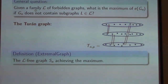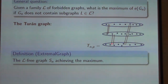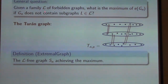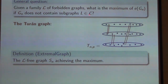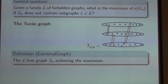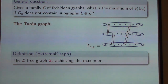A short introduction to notation: the Turán graph on N vertices with P classes means that N vertices are distributed into P classes as evenly as possible, and two points are joined if and only if they belong to different classes. The general question in Turán-type extremal problems is: given a family of forbidden graphs, how many edges can a graph G_N have if it doesn't contain any graph from the forbidden family? The maximum is denoted by ex(n, L).